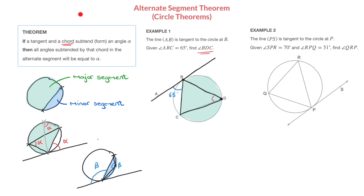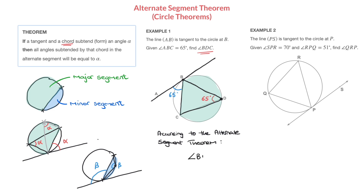Point D is on the circumference of the alternate segment. Consequently, the angle at D is an angle at the circumference of the alternate segment, formed or subtended by the chord BC. Going back to our theorem, which tells us that all angles subtended by the chord in the alternate segment equal the angle formed by the tangent and that chord, this angle at D must equal 65 degrees.